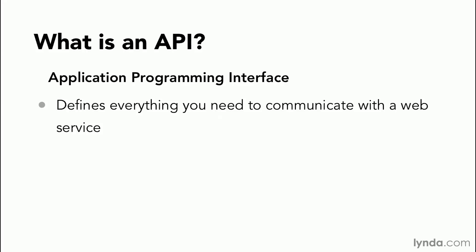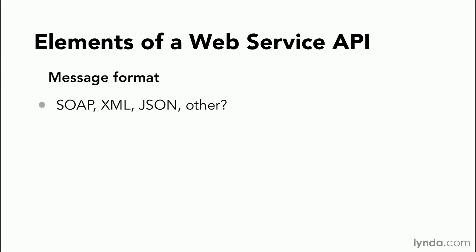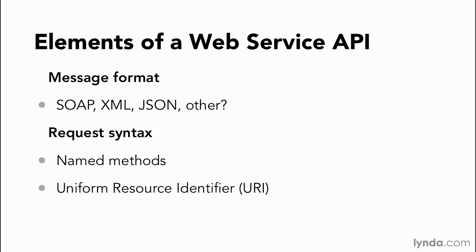Here are some of the critical things you need to know. First, what's the message format? Some web services use SOAP, a particular XML format. Others use generic XML markup. And still others use JSON, an acronym for JavaScript Object Notation. And how do you form a request — that is, what is the required syntax of the service requests? Do you make requests with named methods using syntax similar to client-side programming? Or do you use uniform resource identifiers, or URIs, that are sent as HTTP requests?